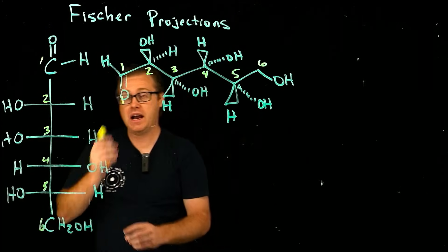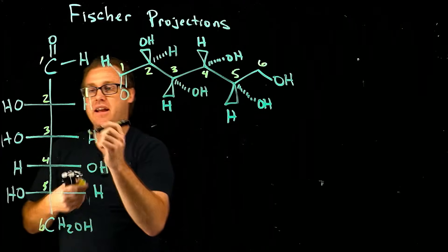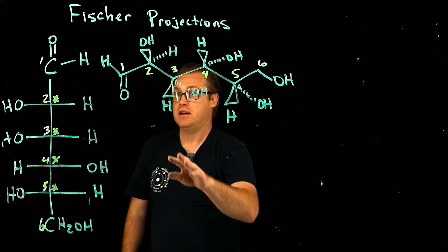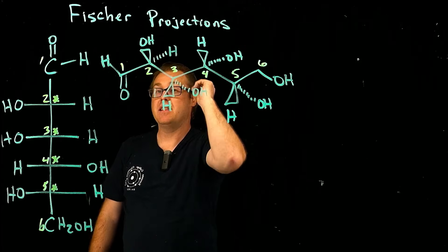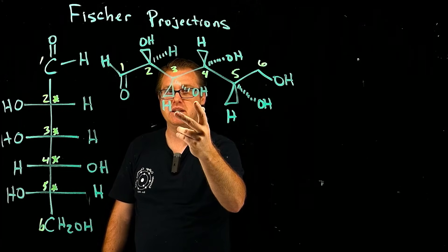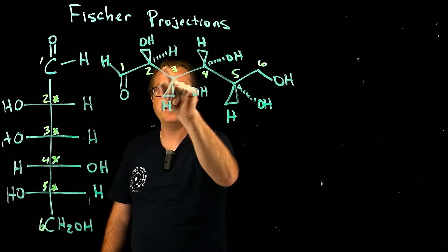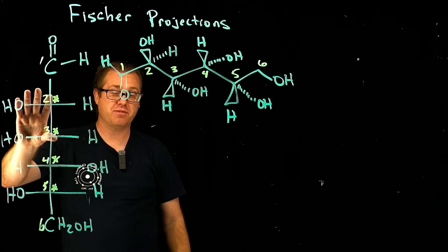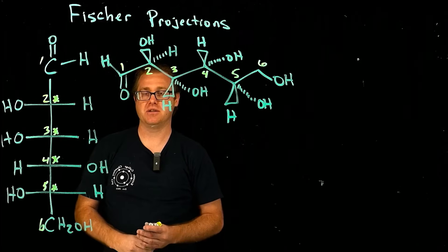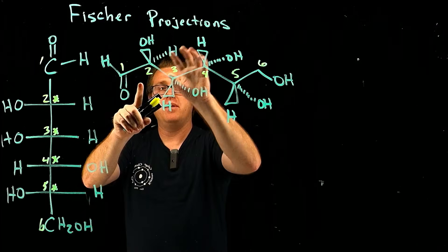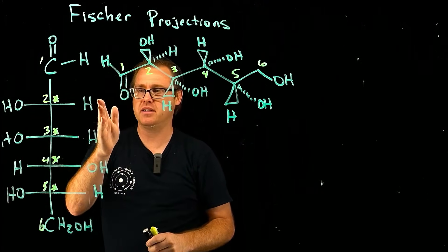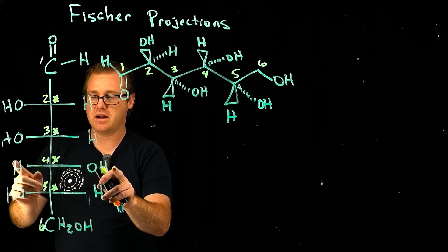This is very important because carbons two, three, four, and five are stereocenters. If you take an OH and a hydrogen and swap them, you've made a different sugar — they are not interchangeable. That sugar is defined by its stereochemistry, so when you draw the Fisher projection, the stereochemistry has to match perfectly.